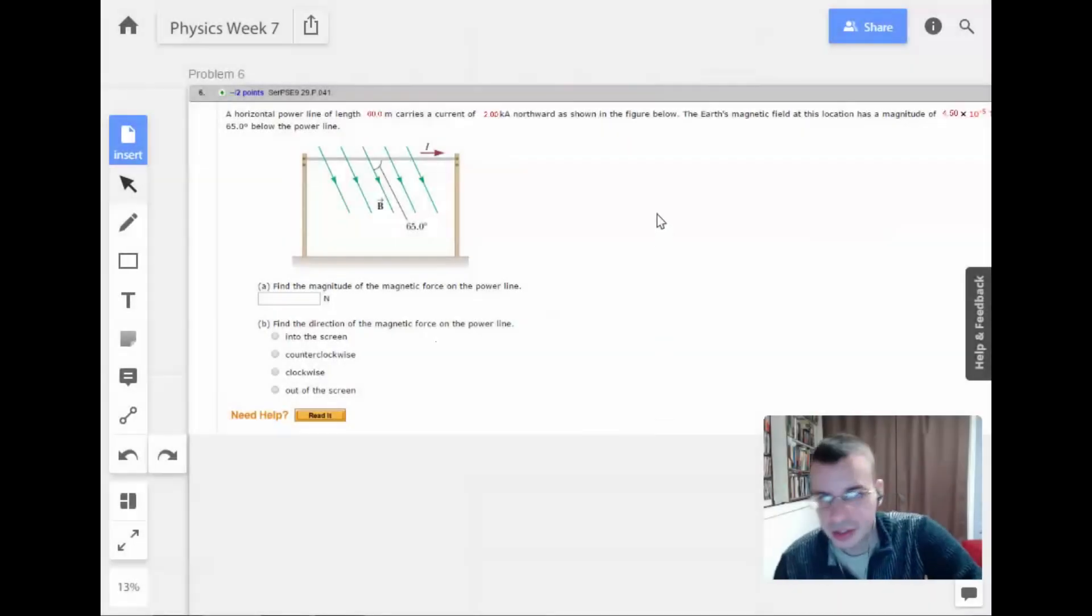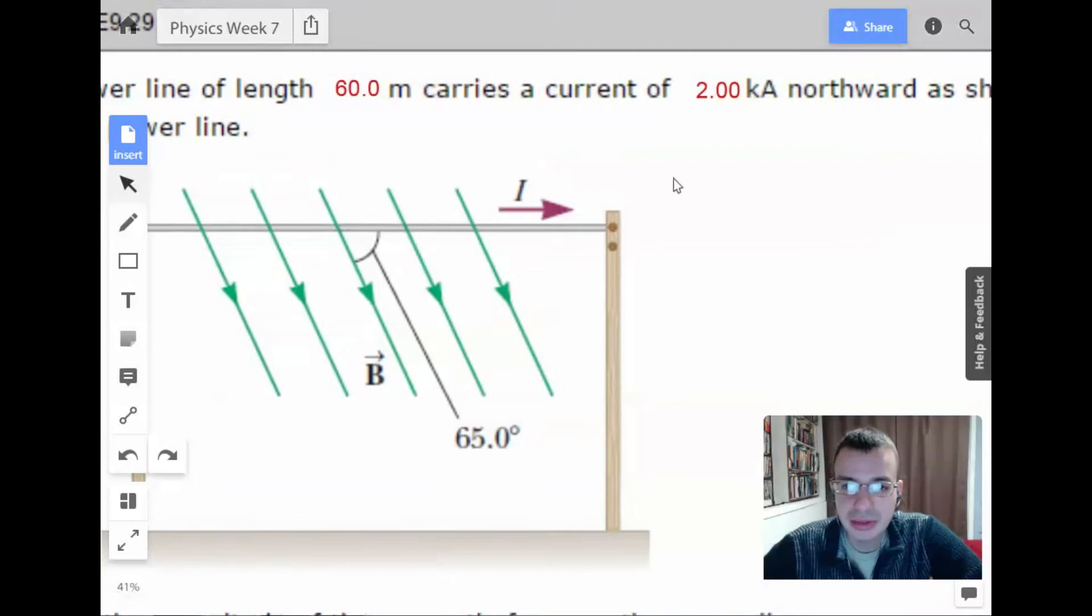Week 7, problem 6. A horizontal power line of length 60 meters